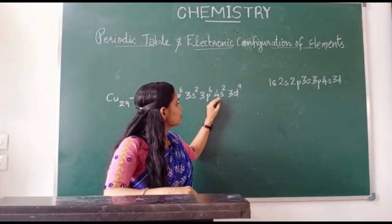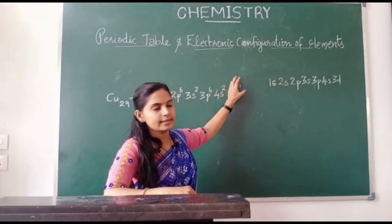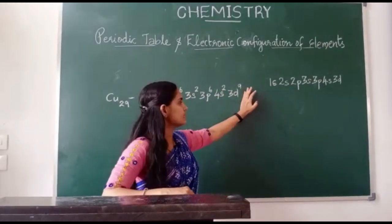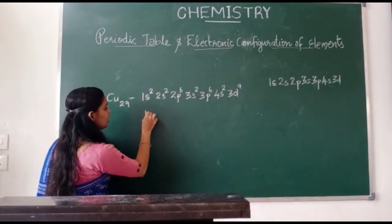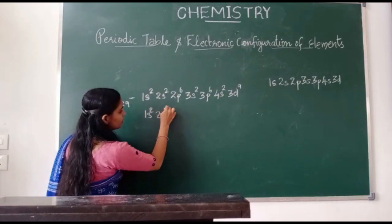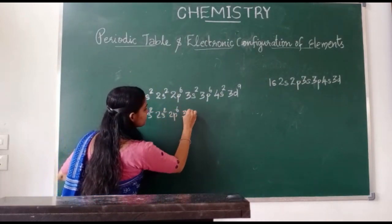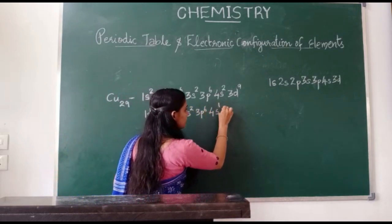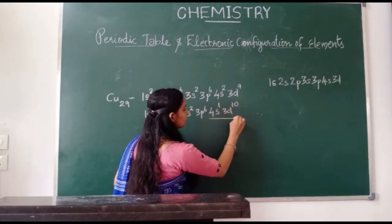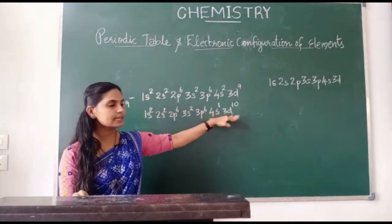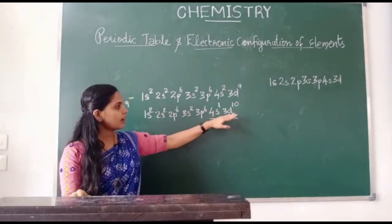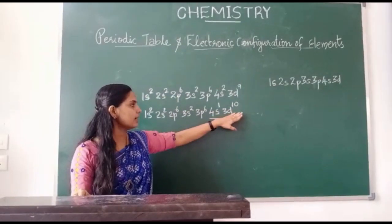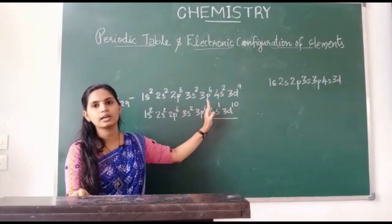So one electron shifts from 4s2 to 3d9, giving us 4s1, 3d10. The 3d10 is completely filled and therefore more stable. This is the actual electronic configuration of copper.